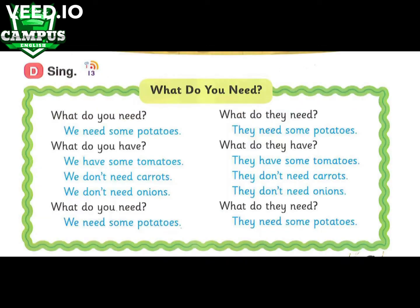Page 7, D. Sing. What do you need? We need some potatoes. What do you have? We have some tomatoes. We don't need carrots. We don't need onions. What do you need? We need some potatoes.